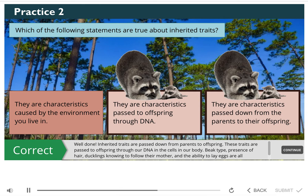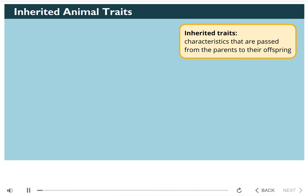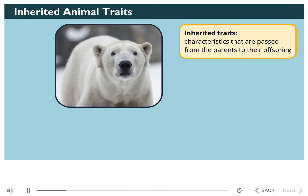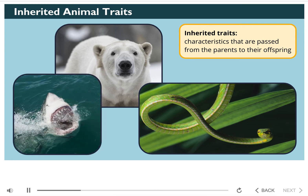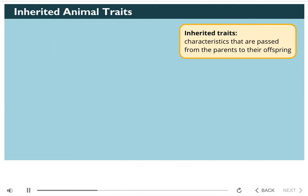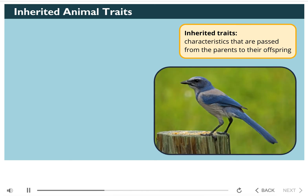Beak type, presence of hair, ducklings knowing to follow their mother, and the ability to lay eggs are all examples of inherited animal traits. Most animal traits are inherited from their parents. Inherited traits include the presence of hair, like seen on this polar bear, or the presence of scales, as seen on this snake. The shape of an animal's teeth is also an inherited trait — look at the chompers on this great white shark. Bird beaks are inherited traits. Here is a scrub jay. It eats insects, berries, and nuts, so its beak is strong and medium-sized in length.